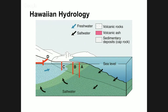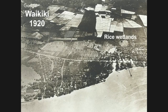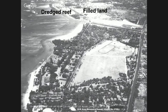This 1920 image of western Waikiki shows an aerial view of wetlands cultivated into rice paddies. When they dredged the Ala Wai in the mid-1920s, they used that dredge material along with material from the coastlines to fill the land. So in many areas across Kaka'ako and Waikiki, the accommodation space is only as thick as that fill layer.